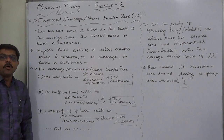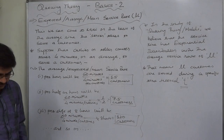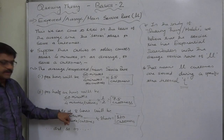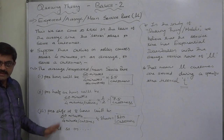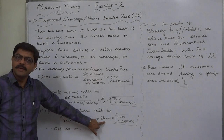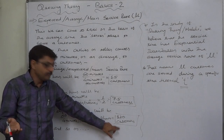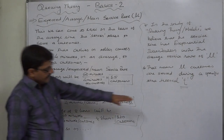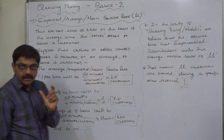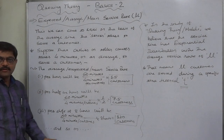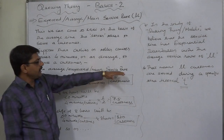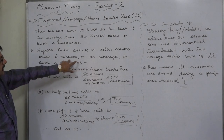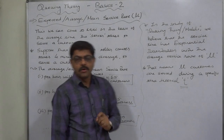Similarly, if we study per shift of 8 hours — normally a shift is 8 hours — the calculation is: 60 minutes per hour divided by 4 minutes per customer, multiplied by 8 hours per shift, giving 120 customers per shift. T can take any specific value of a time interval, and we can easily calculate the mean service rate if we know the average time a server takes to serve one customer.